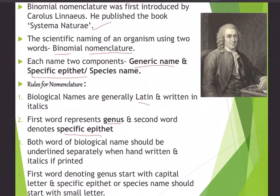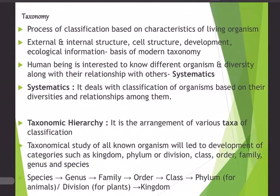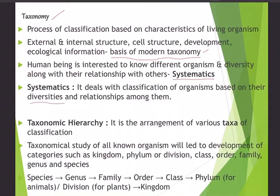Both words should be underlined separately when handwritten and italicized when printed. The genus name starts with a capital letter, and the specific epithet should be in small letters. Based on this nomenclature we classify organisms — this process of classification based on characteristics of a living organism is called taxonomy. Taxonomy uses external structure (morphology), internal structures (anatomy), cell structure, development, and ecological information.